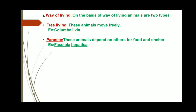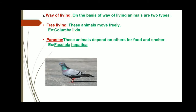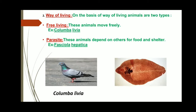Number two: way of living. On the basis of way of living, animals are two types. One is free living — these animals move freely, for example Columba livia. Another is parasite — these animals depend on others for food and shelter, like Fasciola hepatica from Platyhelminthes. This parasite is found in human beings and also in some other species.